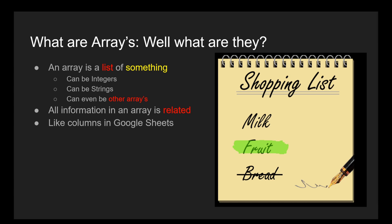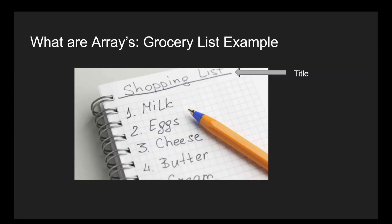Think of arrays as a column in Excel or Google Sheets. You have the title at the top and then below it are a bunch of bits of information which all relate to the title. Arrays are super useful when programmers want to store a lot of information that can be easily searched through, because programmers have developed methods of breaking down and using arrays to find specific information in arrays full of thousands of different variables.